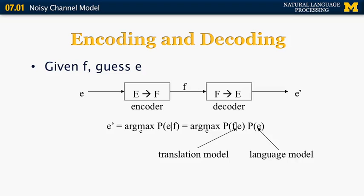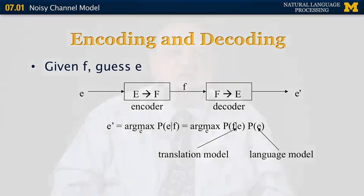We already know what a language model looks like: it takes a sequence of words in a given language — in this case English — and tells us how likely it is that that particular sequence is a valid sentence. Now we introduce the translation model, which essentially tells us: given a certain sentence in English, what's the probability that a particular sentence in the foreign language corresponds to that English sentence?